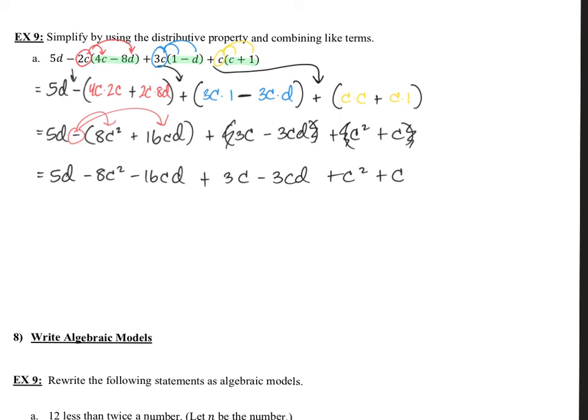That's 5d minus 8c squared minus 16cd, then plus. We'll go ahead and drop these parentheses because we don't have a negative sign. 3c minus 3cd plus c squared plus c. We've gotten rid of all the parentheses. We don't need to do any more distributive property. Now we just need to combine any like terms. I'm going to kind of ignore the numbers at the moment and just focus on the variables. I have a d here, but none of the other terms have just one d. That guy is by itself. I have a c squared here, do I see any other c squares? Right there. We have two like terms. I have a cd, do I see any other cds? Right there, another cd. Lastly, we have c. Do I see any other c's? Right there.